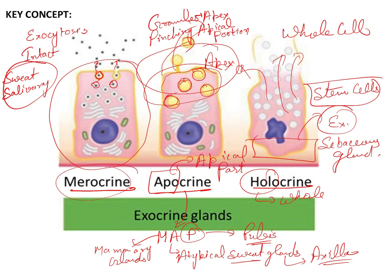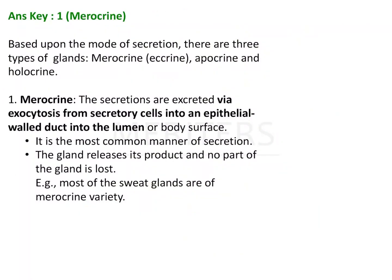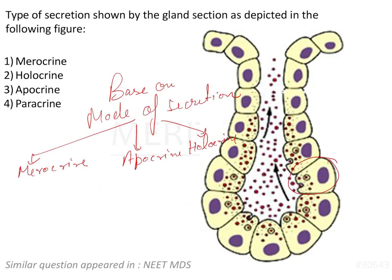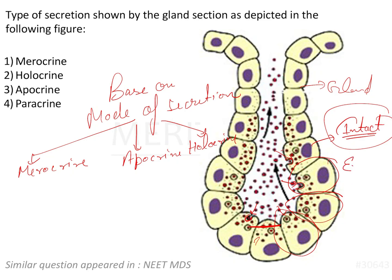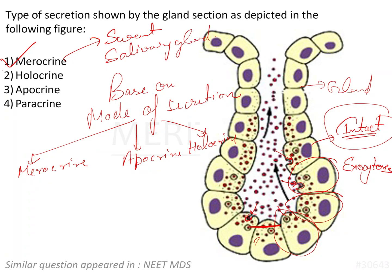Looking at the figure, we can see the gland and its various cells, and there is exocytosis of granules occurring. The cells are very much intact — there is no disintegration of the apical part or complete bursting of the cell. Since the cells are intact and exocytosis is being performed, it is the merocrine mode of secretion, as seen in sweat and salivary glands. Therefore, the answer to this question is merocrine.